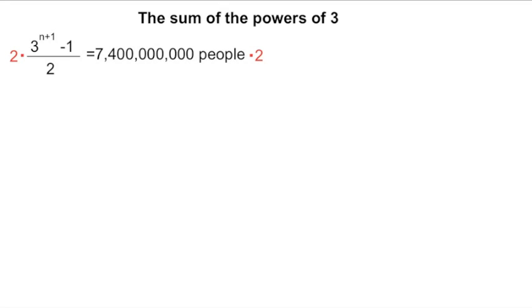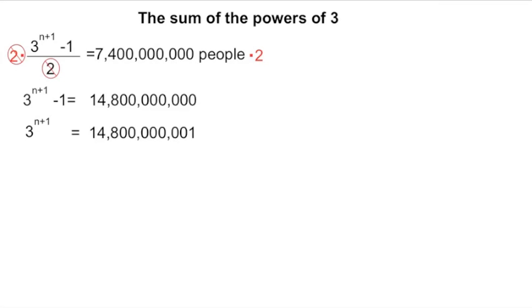So then those twos cancel each other out. We're left to three to the n plus one, minus one, equals 14.8 billion. So now add one to both sides. Okay, so now we're at a point where we're saying, what power do we raise three to to get 14.8 billion? So we can actually calculate this using logarithms.